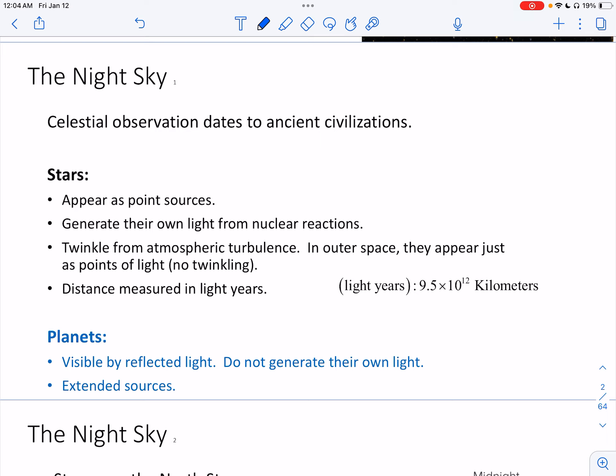So let's just start with stars. They are point sources of light and they generate their own light from nuclear reactions, typically nuclear fusion reactions. They twinkle. The reason why they twinkle is due to atmospheric turbulence. So in outer space they just appear as points of light. There is no twinkling but when we see the light through the atmosphere there is that twinkling because of the atmospheric turbulence. The distance to the star is measured in light years and a single light year is 9.5 times 10 to the 12 kilometers which is a long way.